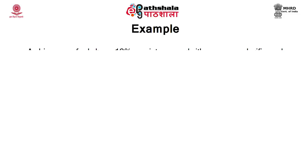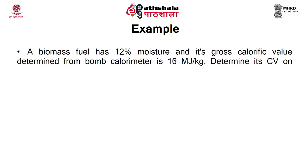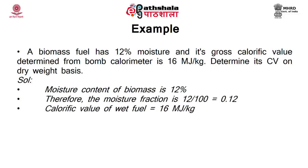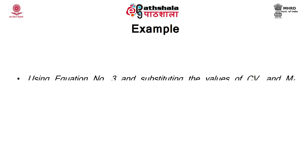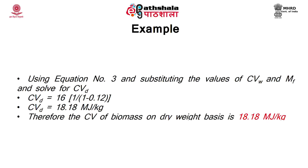Example: A biomass fuel has 12% moisture and its gross calorific value from the bomb calorimeter is 16 MJ/kg. Determine the calorific value on dry weight basis. Moisture fraction Mf = 12/100 = 0.12. CVw = 16 MJ/kg. Using CVd = CVw × 1/(1 − Mf): CVd = 16 × 1/(1 − 0.12) = 18.18 MJ/kg. Therefore, the calorific value of biomass on dry weight basis is 18.18 MJ/kg.